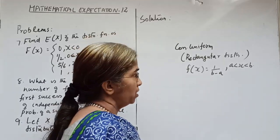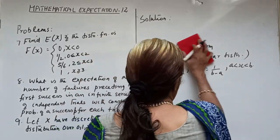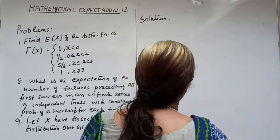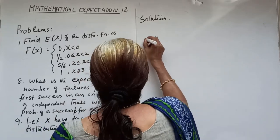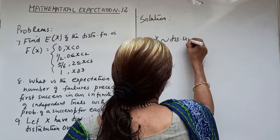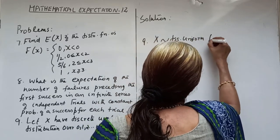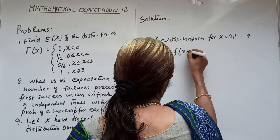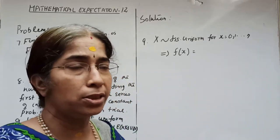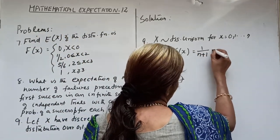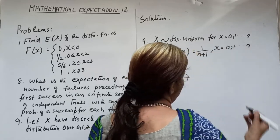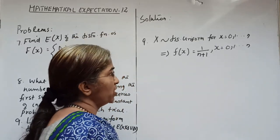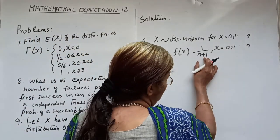For the discrete case, X takes values 0, 1, ..., N. Since it is a discrete uniform distribution, f(X) is constant for all values. There are N + 1 values including 0, so f(X) = 1/(N+1) for X = 0, 1, ..., N.